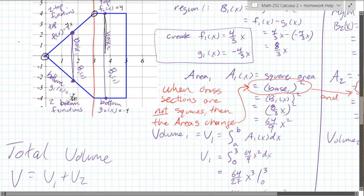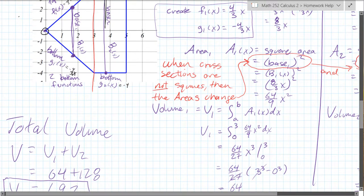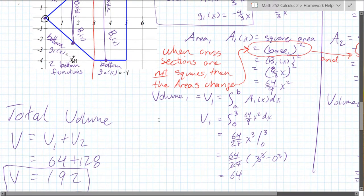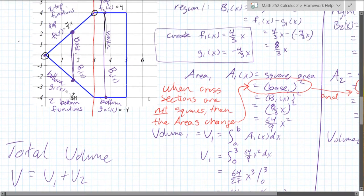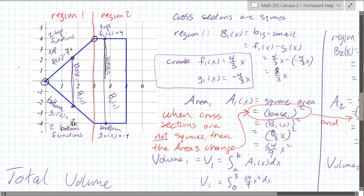So we're going from zero to three and integrating the a1 function, which is a 64 ninth x squared anti-power rule, plug in endpoints, and you get 64. Okay, so that's the first region.